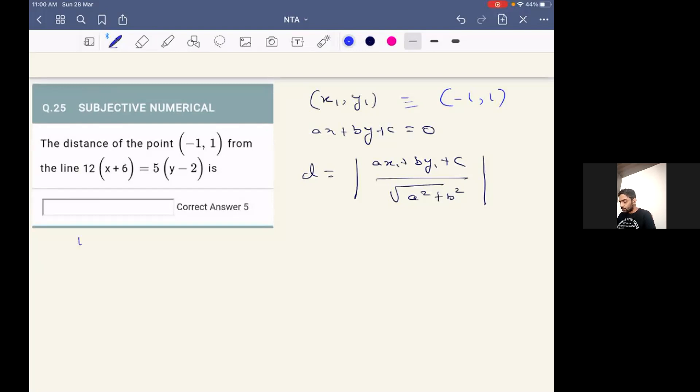So once we do that, we'll get it as 12x plus 72 will be equal to 5y minus 10. So we can rewrite the equation of line as 12x minus 5y plus 82 equal to zero.